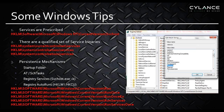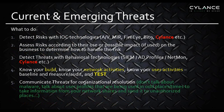Persistent mechanisms — there are only a few methods available in Windows: startup folders, scheduled tasks, the registered service keys with a svchost -k call, or autoruns in the run keys.